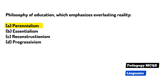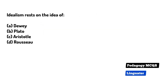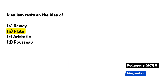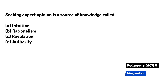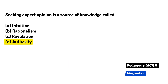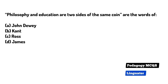Philosophy of education which emphasizes everlasting reality — the right answer is perennialism. Idealism rests on the idea of plateau. Seeking expert opinion is a source of knowledge in philosophy. Philosophy and education are two sides of the same coin.